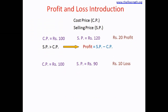In the other example, CP was 100 rupees and SP was 90 rupees, so there was a loss of 10 rupees. The formula: if SP is smaller than CP, then it is a loss, and loss equals CP minus SP. You always subtract the smaller number from the bigger number. If SP is bigger, it's profit; if CP is bigger, it's a loss.